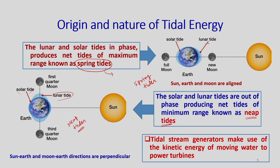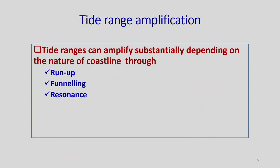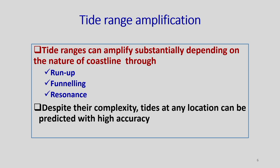A tidal stream generator makes use of the kinetic energy of moving water to power turbines, which then produce electricity. Tidal ranges can be amplified by different techniques, some of which are run-up, funneling, and resonance. Despite their complexity, tides at any location can be predicted with high accuracy.